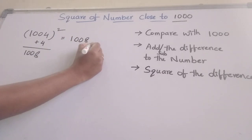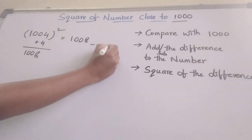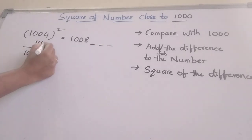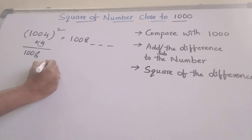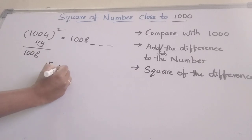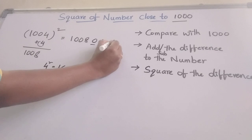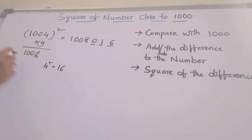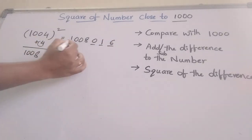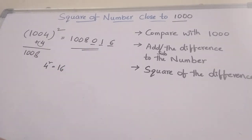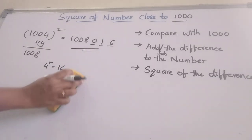After that we take 3 blanks here. What is the square of 4? 4 squared is 16, so write 016 here. What is the square of 1004? That is this number — this is the answer. Next, let's move to one more example.